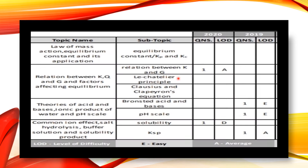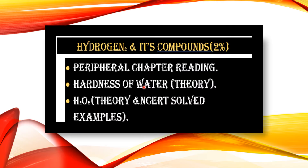In 2020, an average-difficulty question on the relation between K and ΔG was asked, and a difficult question on solubility was also asked. In 2019, an easy question on Brønsted acids and bases appeared, another easy question on the pH scale, and an average-difficulty question on solubility product.